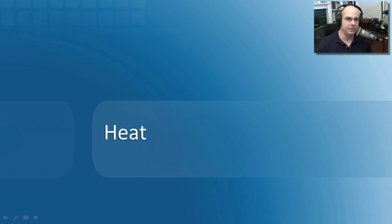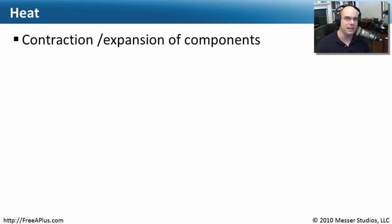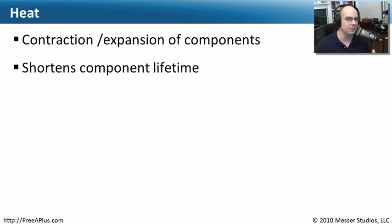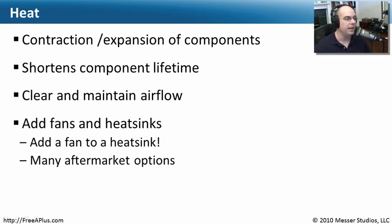Heat is a variable that's very difficult to troubleshoot because you're never quite certain of the impact it's having on a component. As things heat up, they expand; as they cool down, they contract. If devices heat up and contract enough, they may create problems with connections to the motherboard. Overheating greatly shortens the lifetime of sensitive electronic components. Make sure airflow through your computer is really good so you're maintaining a longer lifetime for individual components. If it's not getting cool enough, add some fans, add heat sinks, or put a fan on top of a heat sink.